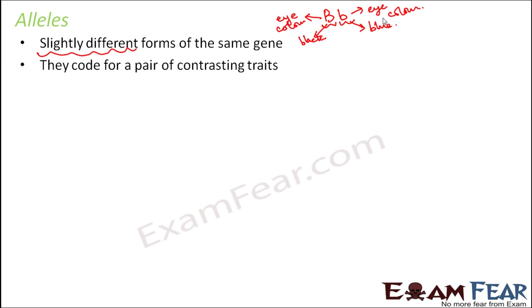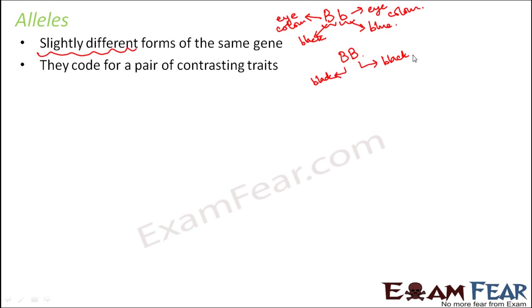It is not always necessary that alleles have to be different — they can be the same as well. For example, an individual can have capital B capital B, having inherited black eye color from both mother and father. So the two alleles in the same gene can be same or they can be different. But every gene will have two alleles — that is for sure — because in sexual reproduction two parents are involved, so for every gene there is one copy from the father and one copy from the mother. Please understand these basics, because if you do not understand the concept of gene and allele, you will not be able to understand genetics.